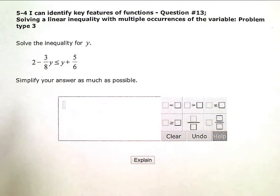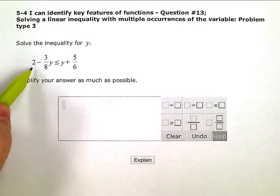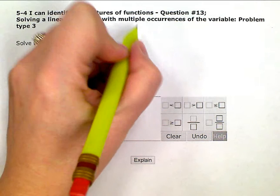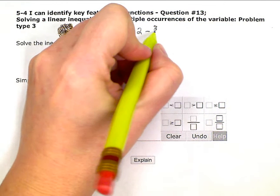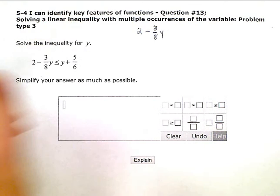So the first thing I'm going to do is I'm going to rewrite this inequality. So 2 minus 3/8 y is less than or equal to y plus 5/6.